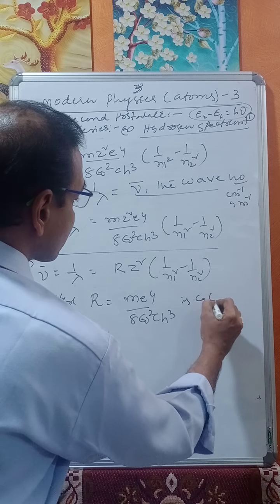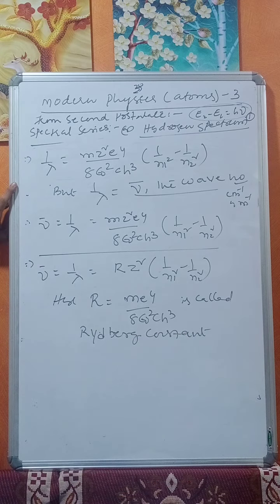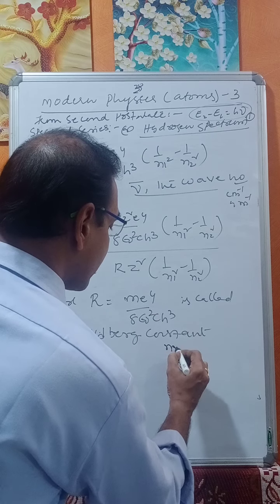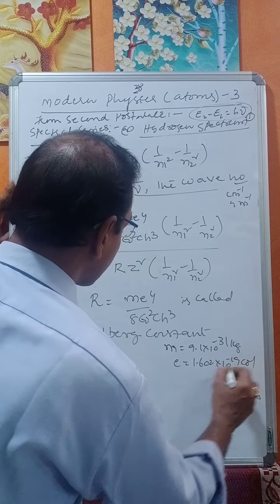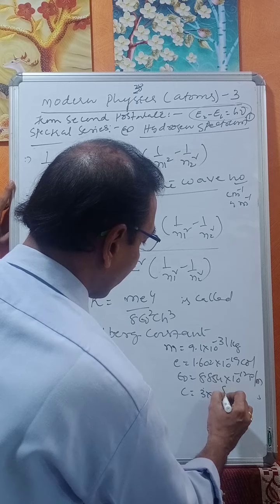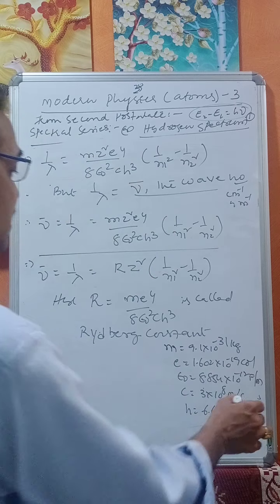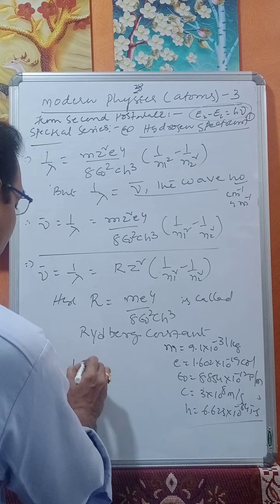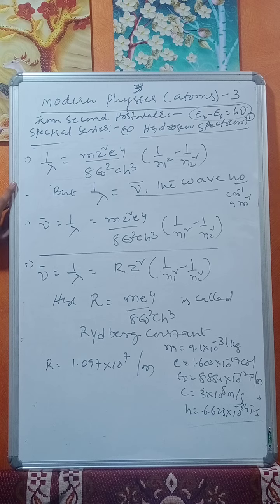Here, R equals m·e⁴ divided by 8·ε₀²·c·h³ is called the Rydberg constant. Substituting the values — m = 9.1×10⁻³¹ kg, e = 1.602×10⁻¹⁹ C, ε₀ = 8.854×10⁻¹² F/m, c = 3×10⁸ m/s, h = 6.625×10⁻³⁴ J·s — we get R equals 1.097×10⁷ per meter.